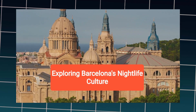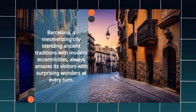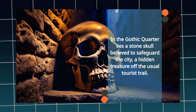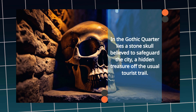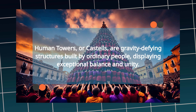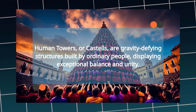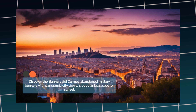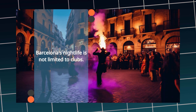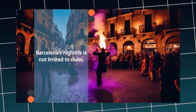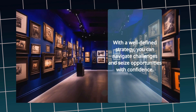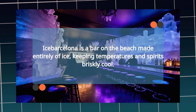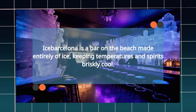Nightlife Secrets — Barcelona's Hidden Cultural Shockers. Barcelona, a city of wonders, surprises its visitors at every turn. Imagine stepping into a world where ancient traditions meet modern eccentricities. Hidden within the Gothic border is a stone skull said to protect the city — this mysterious relic isn't on many tourist maps. Have you heard of the human towers? Known as castels, these gravity-defying structures are built by ordinary people, showcasing incredible balance and unity. Don't miss the Bunkers del Carmen, offering panoramic views of the city — these abandoned military bunkers are a favorite sunset spot for locals. Barcelona's nightlife isn't just about clubs; street performers light up Las Ramblas, where fire brothers and acrobats entertain enthralled crowds every evening. For the daring, the erotic museum offers a bawdy glimpse into the city's sensual history — a quirky yet educational experience. Ever wondered about a bar made entirely of ice? Ice Barcelona, situated on the beach, keeps temperatures and spirits brisk.